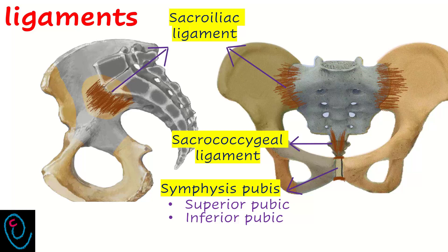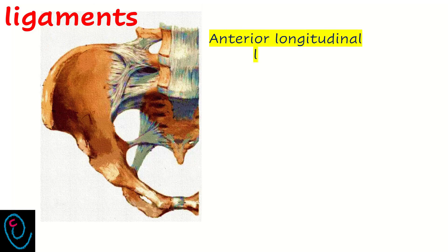On the lower border, the inferior pubic ligament, also known as the arcuate ligament. On the anterior surface, the anterior pubic ligament. On the posterior surface, the posterior pubic ligament. There is also the anterior longitudinal ligament, which runs along the anterior surface of all the vertebrae, including the sacrum.